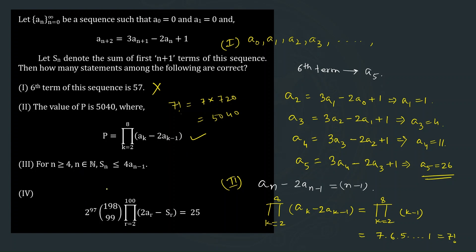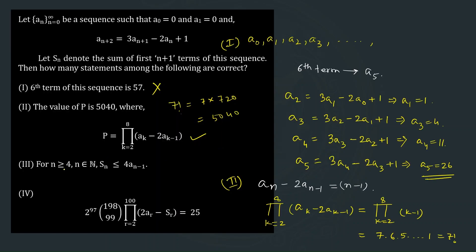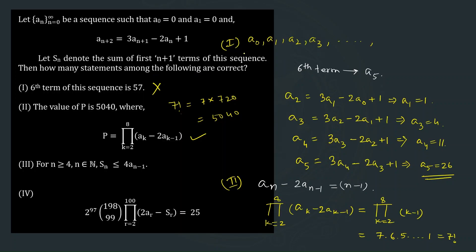Now let us check Statement 3, which says: for n ≥ 4, n ∈ ℕ, Sₙ ≤ 4aₙ₋₁. Recall that Sₙ denotes the sum of the first n+1 terms — that is, a₀ + a₁ + a₂ + ... + aₙ. We need to find a general relation between Sₙ and aₙ₋₁.